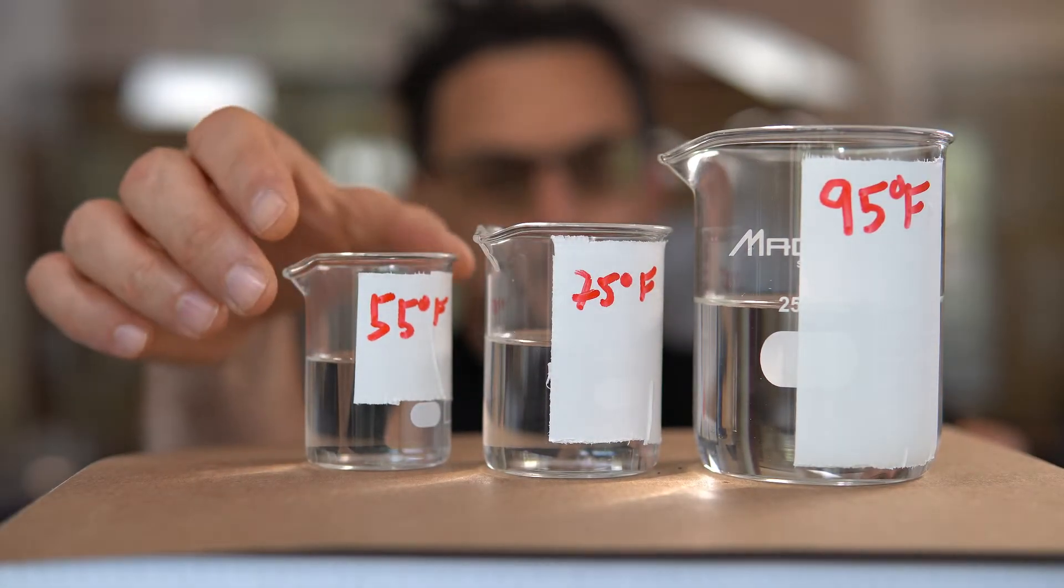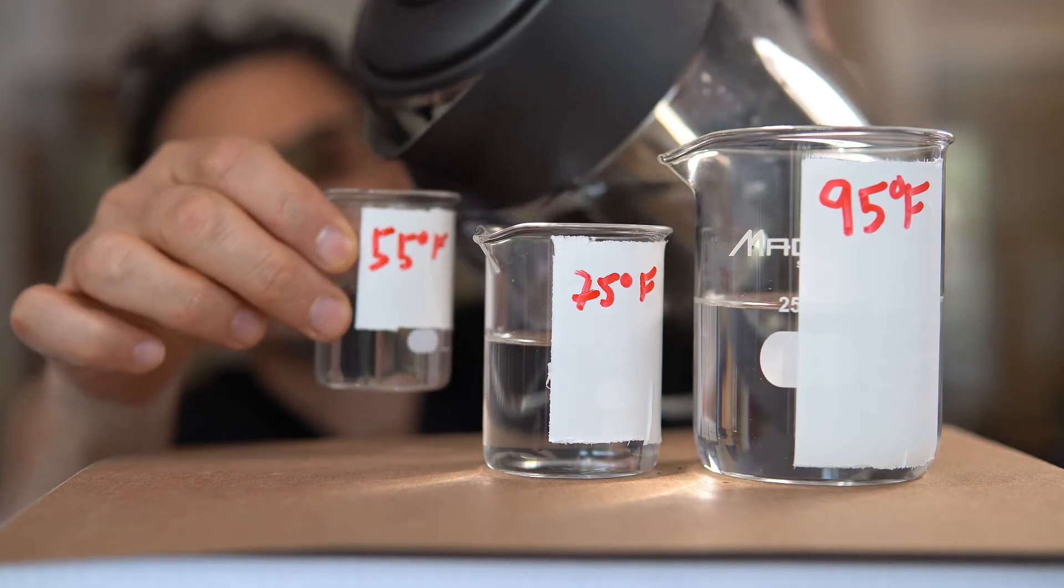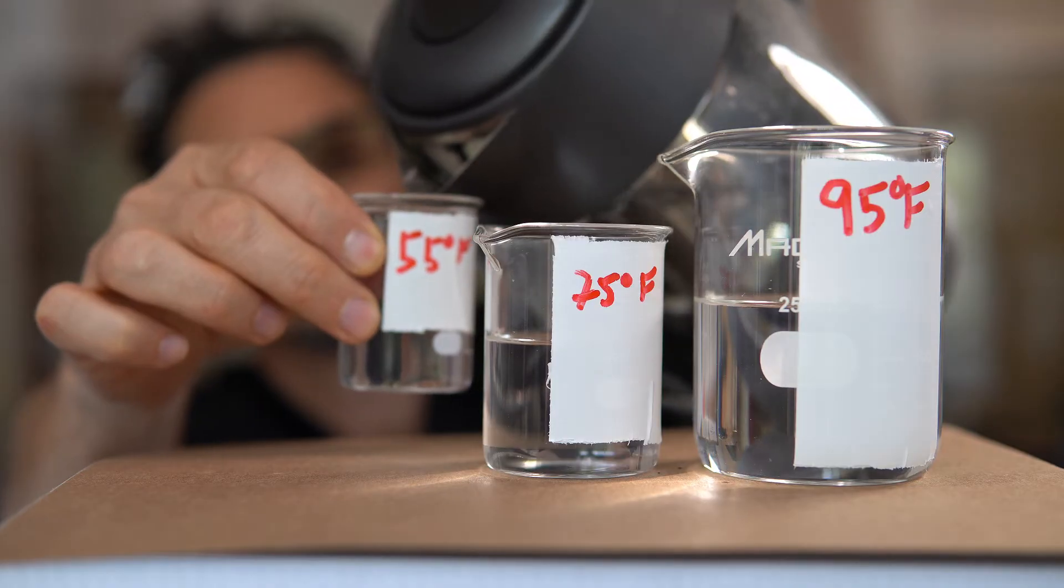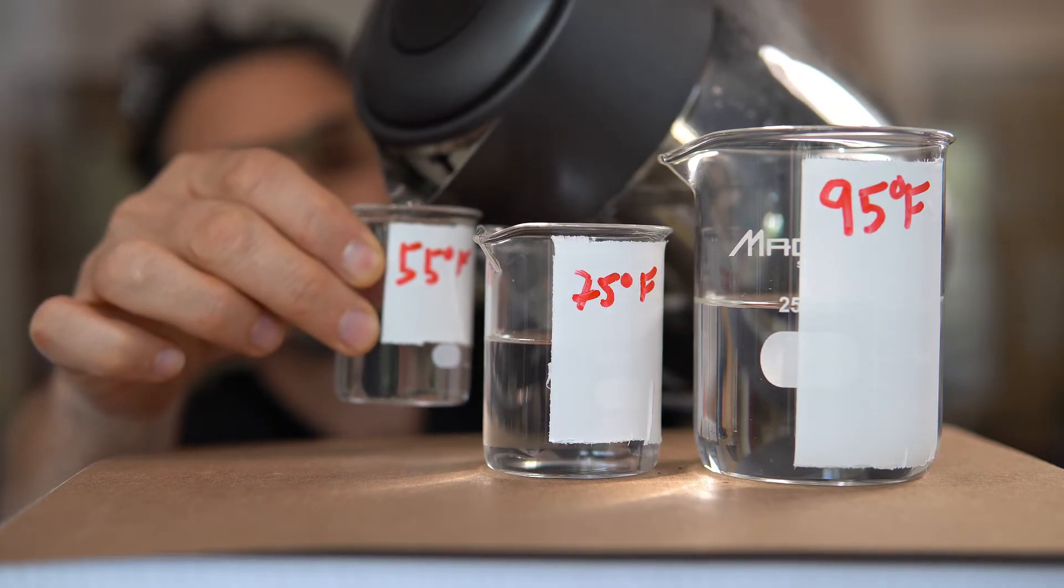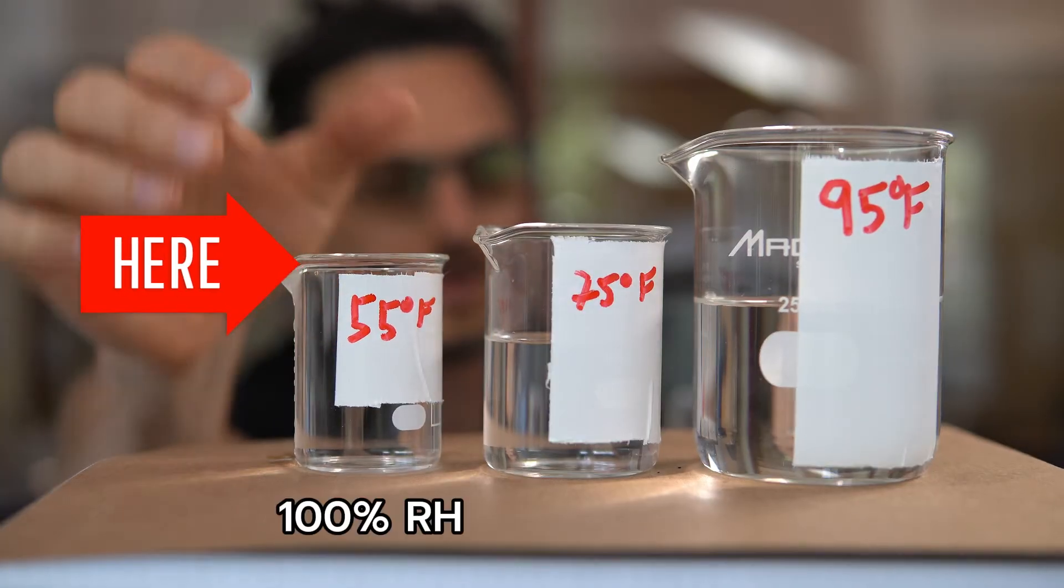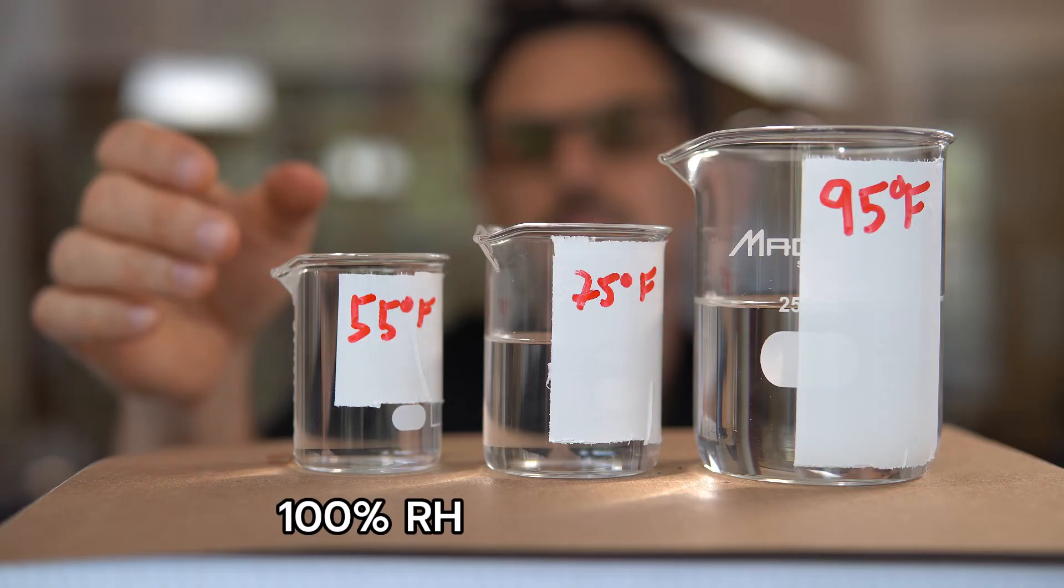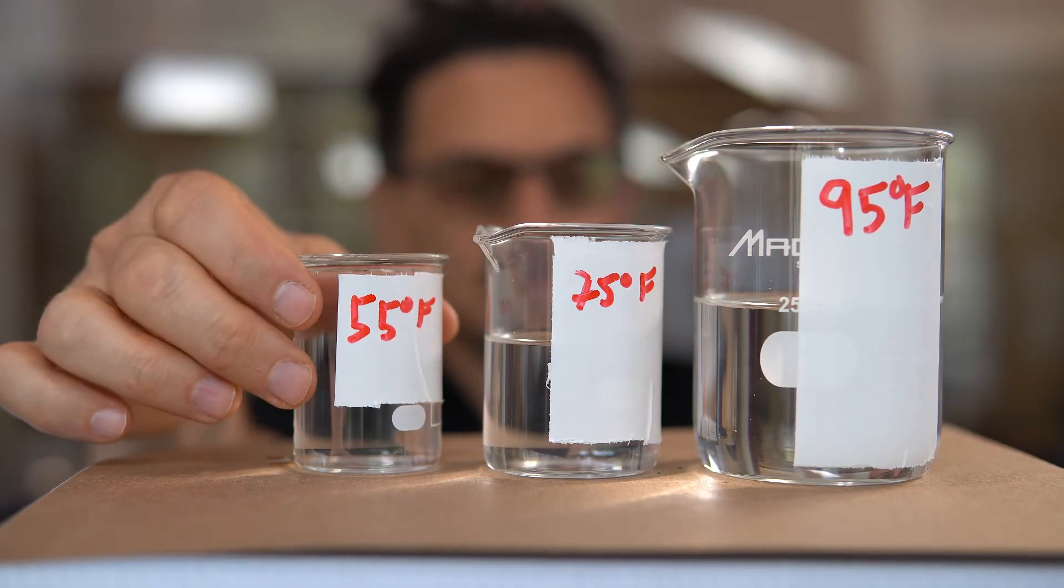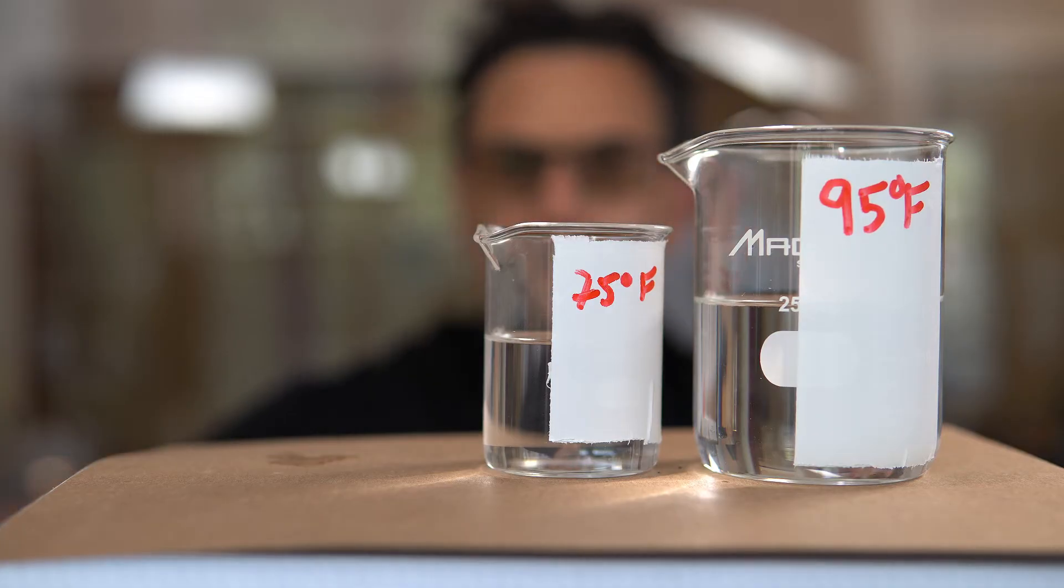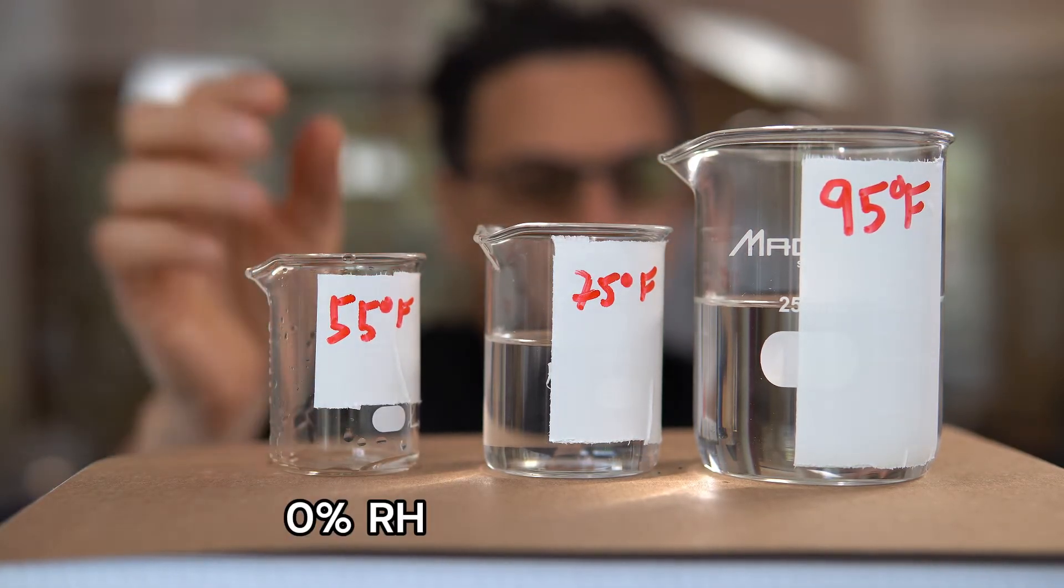So what would 100% RH look like? Well, it would look like something like that. Without spilling this on my computer and getting everything wet, it would look something like that. So that would be 100% humidity and zero percent RH, minus a few droplets in there, would look something like that.